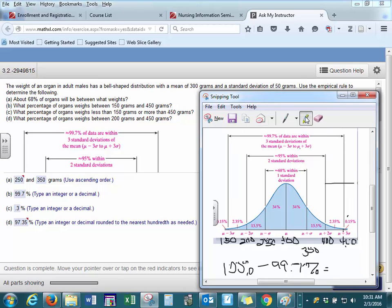If we highlight, 250 starts here, and we want to go up to 450 here. So if we add together all of these percentages, that will give us 97.35%: 34 plus 34 plus 13.5 plus 2.35.